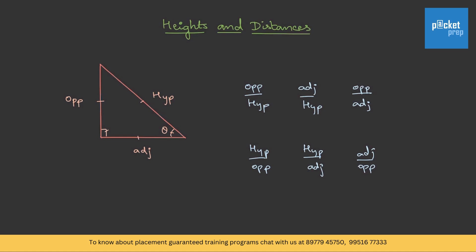Each of these is given a name. Opposite by hypotenuse is called the sine ratio. Adjacent by hypotenuse is cosine ratio. Opposite by adjacent is tangent ratio. Hypotenuse by opposite is cosecant. Hypotenuse by adjacent is secant, and adjacent by opposite is cotangent. Because these ratios are with respect to an angle theta, it is always a good practice to write it with respect to theta.